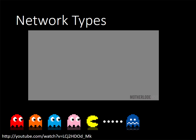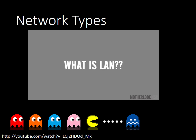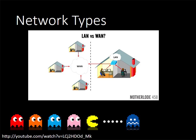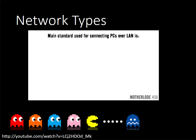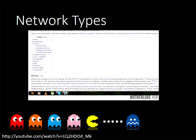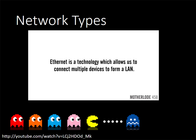A local area network is a computer network that connects computers within a limited area such as a home, school, or office building. LAN and WAN are often mixed up — the LAN would be just one building with devices inside connected to each other, whereas the WAN would be many of those buildings that are geographically far apart but all connected to each other, forming a wide area network.